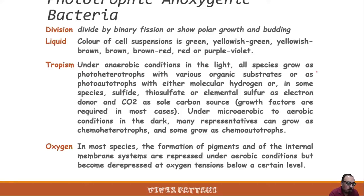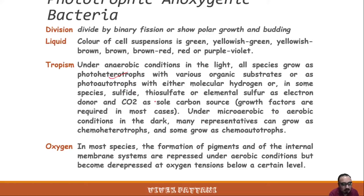In the light under anaerobic conditions, all species grow as photo-heterotrophs with various organic substances, or as photo-autotrophs using molecular hydrogen. In some species they also use sulfide, thiosulfate, or elemental sulfur as electron donors and carbon dioxide as the carbon source. Under micro-aerobic to aerobic conditions in the dark, many representatives can also grow as chemo-heterotrophs or chemo-autotrophs.